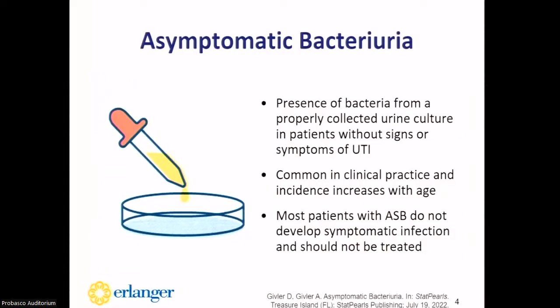So what is ASB? Simply put, this is just the presence of bacteria from a properly collected urine culture in patients that are not presenting with acute urinary symptoms. This is fairly common in clinical practice, and its incidence can increase with age. Most patients do not go on to develop symptomatic infection, and ASB may actually have a protective mechanism from preventing recurrent UTIs. It should not be treated in the vast majority of patients because the risk of antibiotic use far outweighs its benefits.